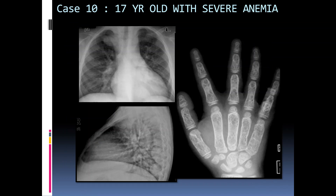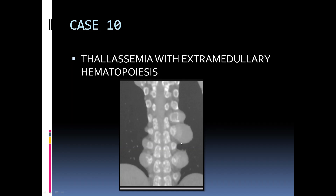This is the last case: a chest radiograph of a 17-year-old with severe anemia shows well-defined lobulated opacity in the right upper zone in the paravertebral location and in the left retrocardiac region, with multiple similar rounded opacities. On the lateral chest radiograph these rounded opacities are located in the posterior mediastinum, and on the hand radiograph there is a trabeculated appearance of all bones along with cortical thinning and medullary expansion. So the diagnosis is extramedullary hematopoiesis in the setting of hemolytic anemia, commonly thalassemia; on CT, the soft tissue masses were confirmed to be arising from the ribs.